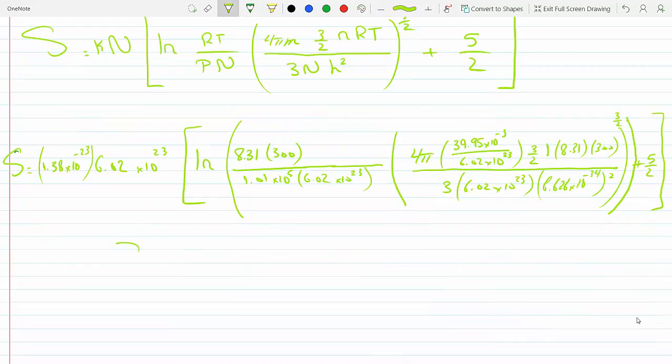Once this is plugged into the calculator, you should get 154.77 joules per Kelvin. This is for argon.